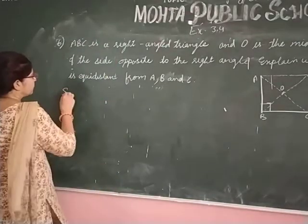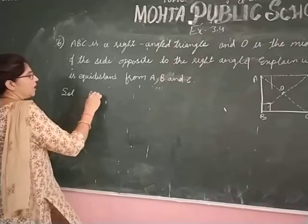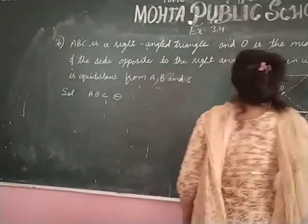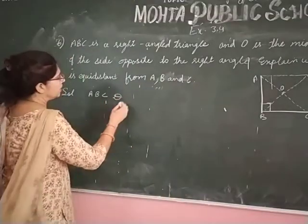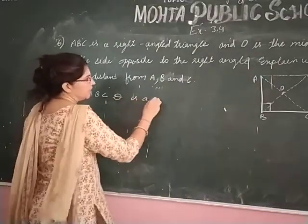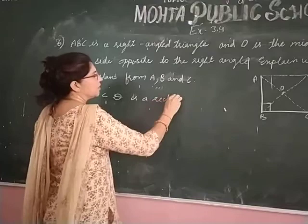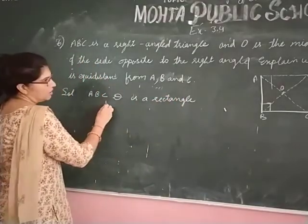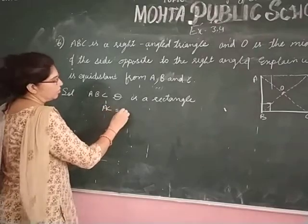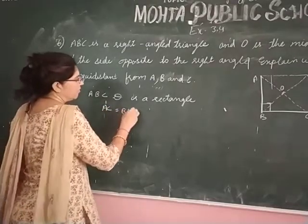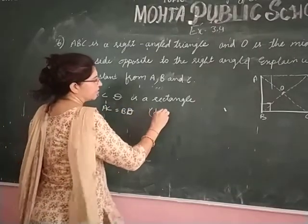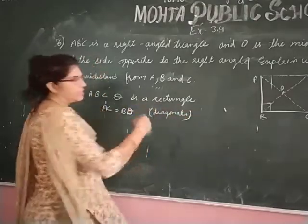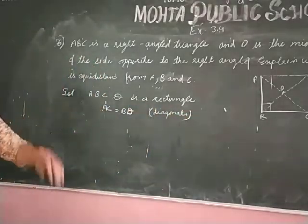Write down, ABCD is a rectangle. Construction has been done. Therefore, AC is equal to BD. Why? Diagonals of rectangle always be equal.